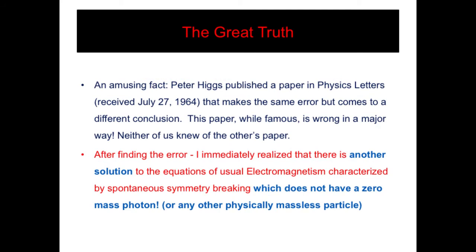As an amusing fact, a few months later, Peter Higgs published a paper in Physics Letters that makes the same subtle error but comes to a different conclusion — the one that everyone now likes, though there was zero justification for it in that paper. That paper has thousands of citations, and only now are people beginning to admit it is wrong. Meanwhile, I realized there was another solution to electromagnetism, characterized by being spontaneously symmetry-broken, which absolutely is not required to have a zero-mass photon — it doesn't have one. There's no zero-mass particle whatsoever associated with this solution.